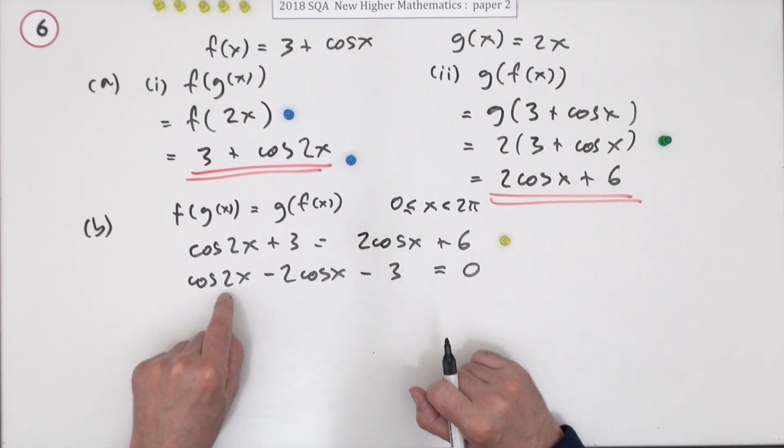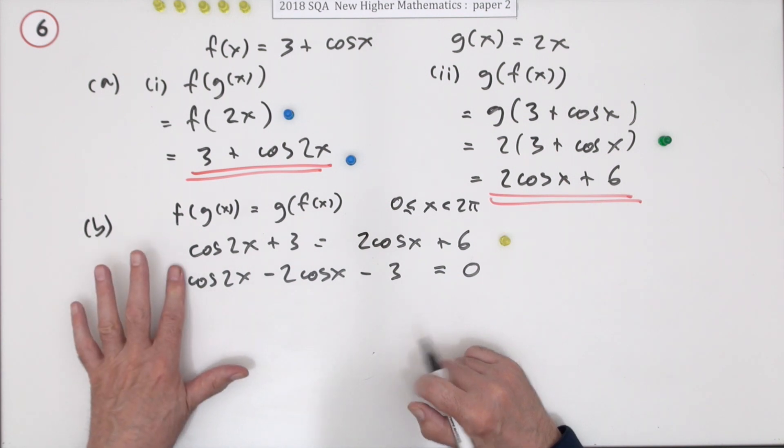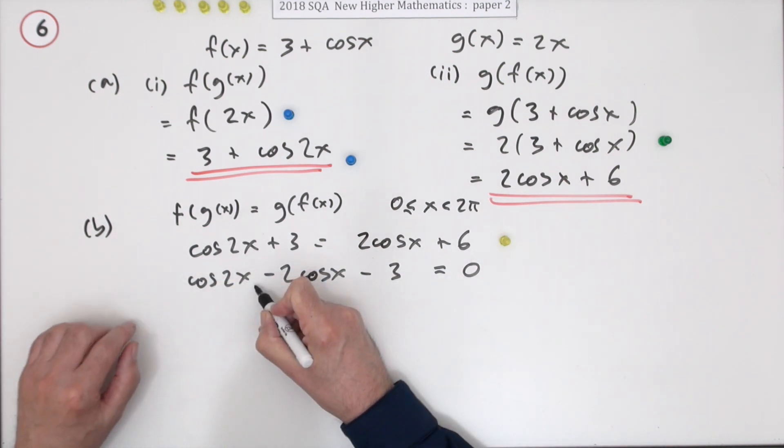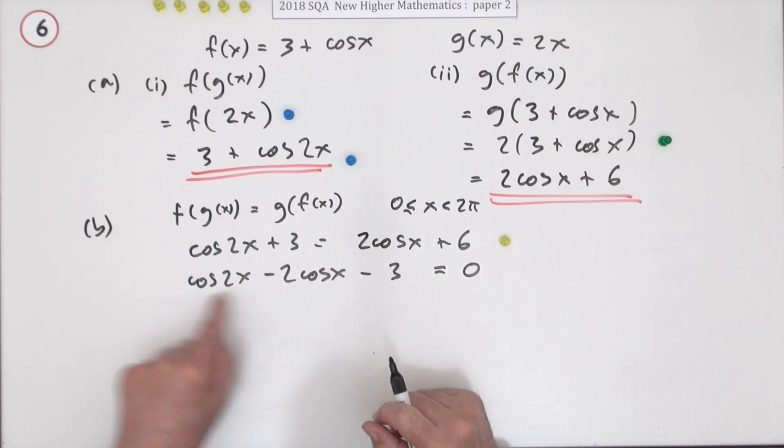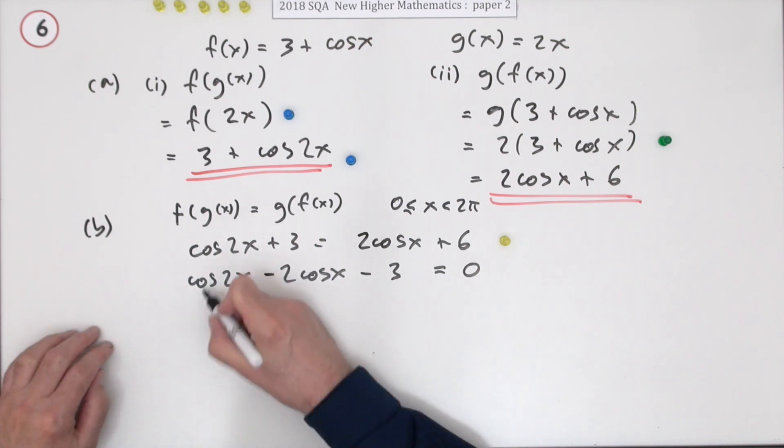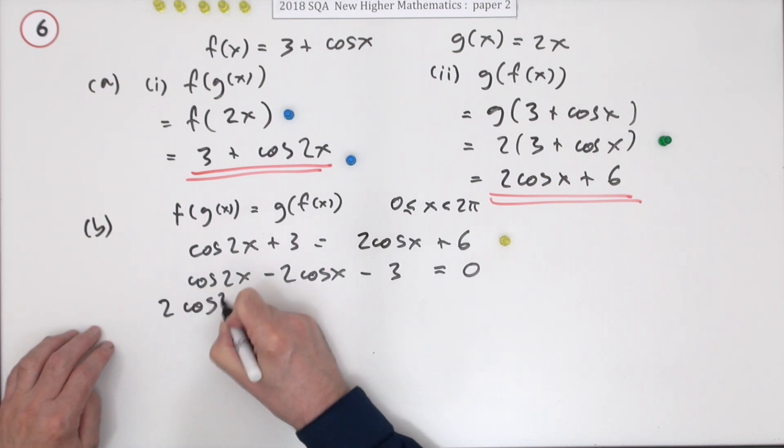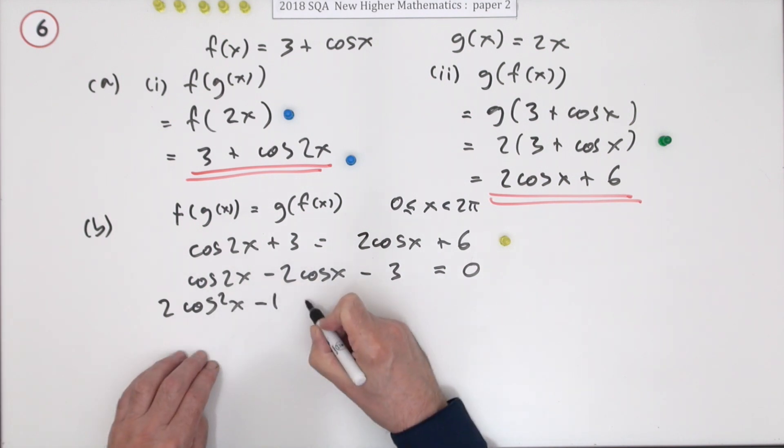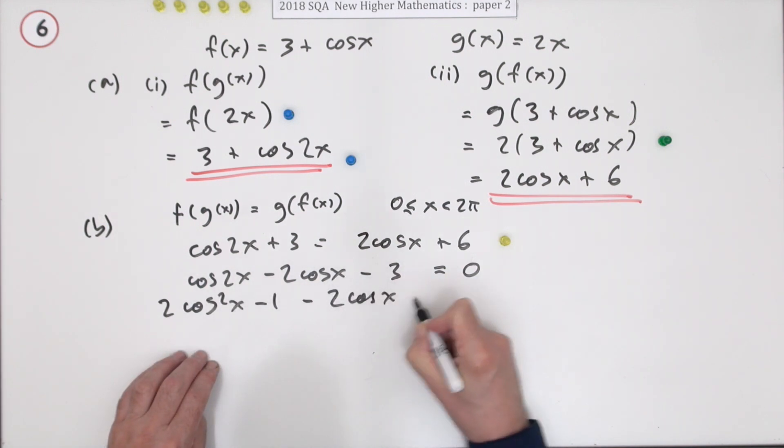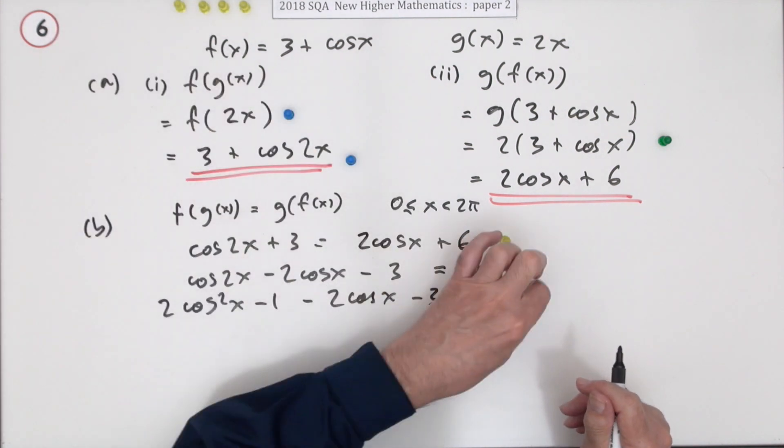The mark will come from expanding this. Luckily it's only one of them, so you look up the front and choose the appropriate form to match cosine only. So that gets replaced by 2 cos squared x minus 1 minus 2 cos x minus 3 equals 0. That's worth the mark.